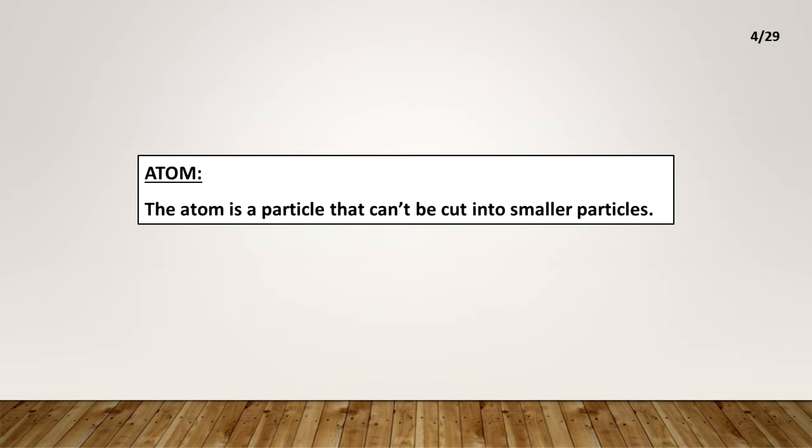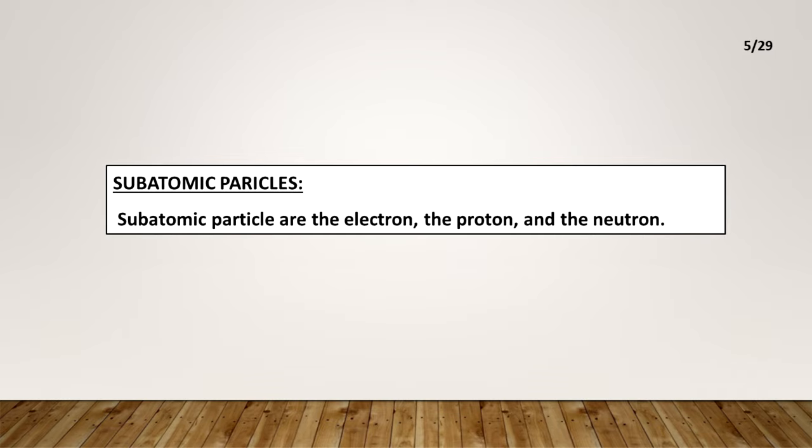Atom: The atom is a particle that can't be cut into smaller particles. Subatomic particles: Subatomic particles are the electron, the proton, and the neutron.